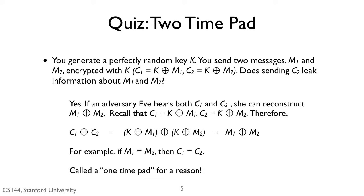The answer is yes. If an eavesdropper named Eve hears both C1 and C2, she can reconstruct M1 XOR M2. If M1 and M2 are both ASCII text messages, this could provide a lot of information.